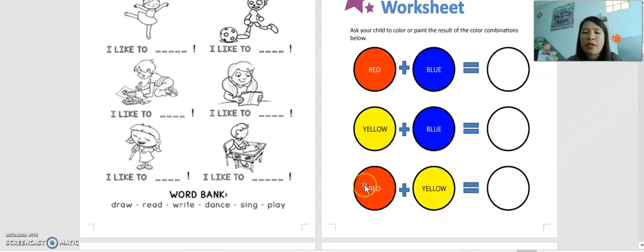The last part here, we're going to mix red and yellow. What is the result of red and yellow? Then color it here.